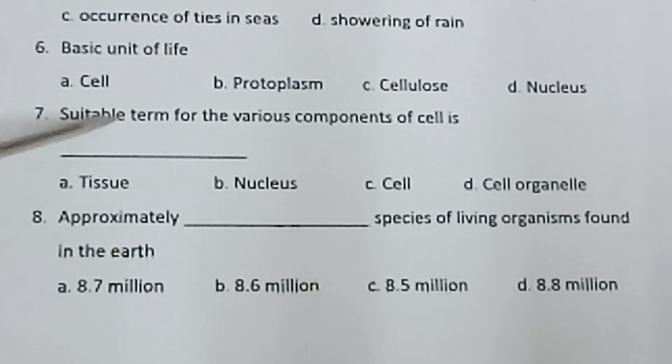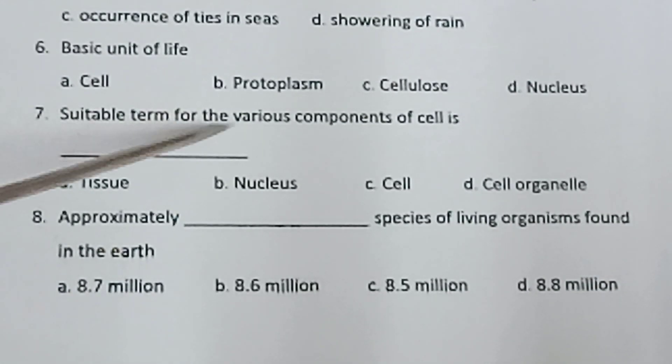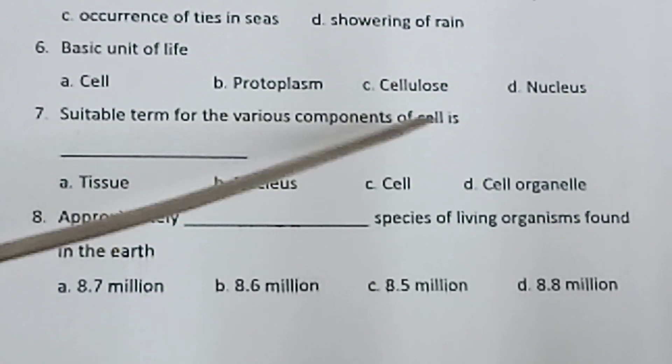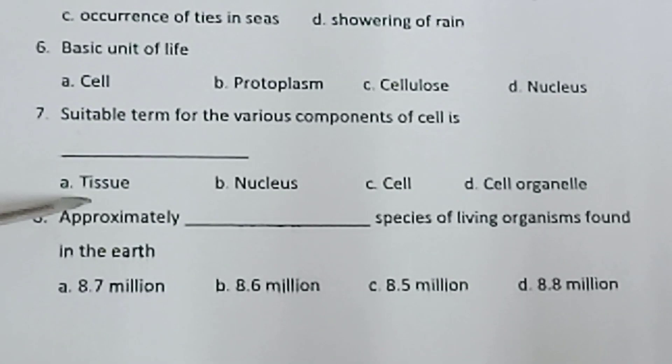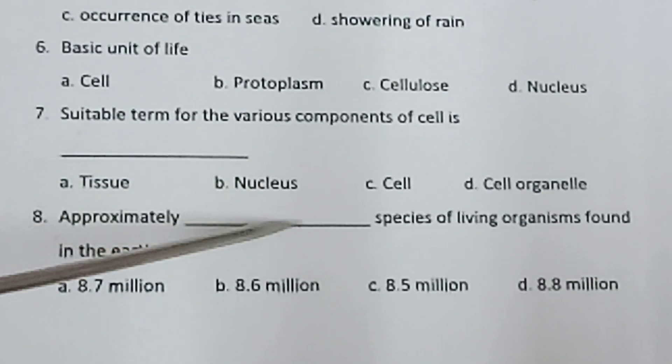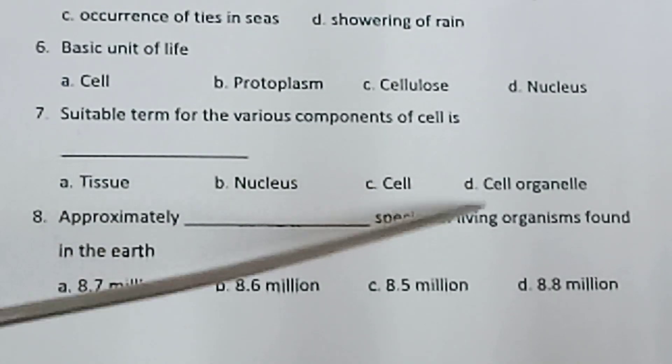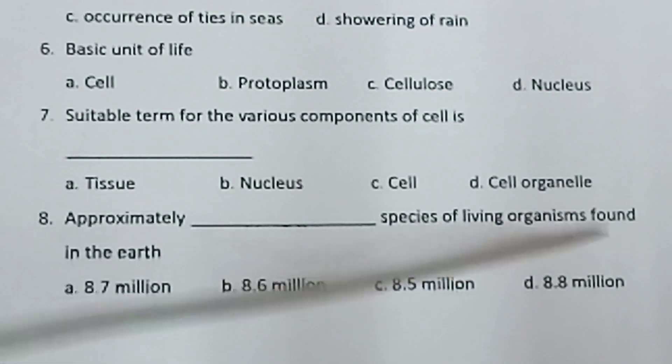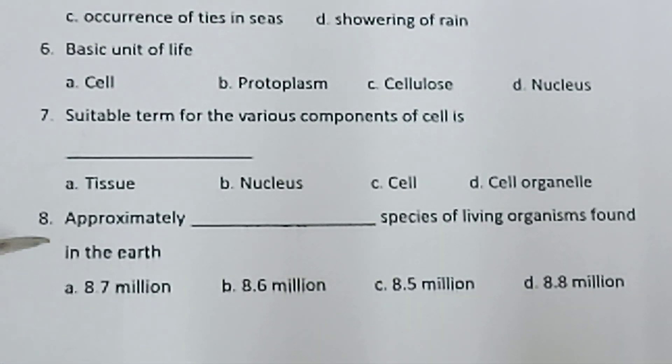Seventh one: The suitable term for the various components of a cell is dash — Tissue, Nucleus, Cell, Organelle.